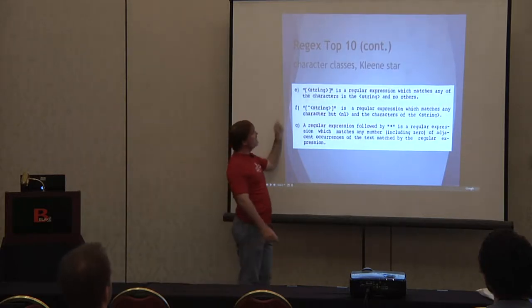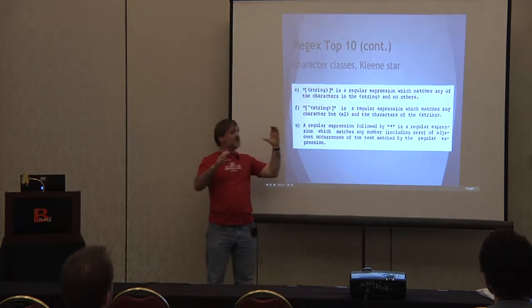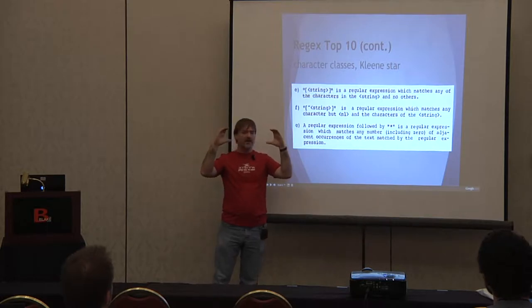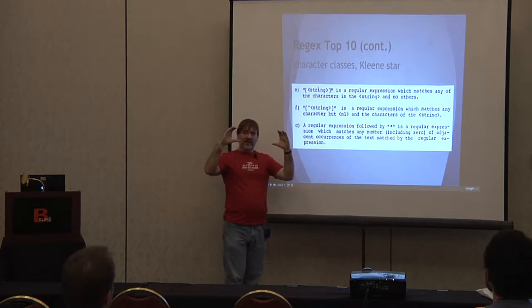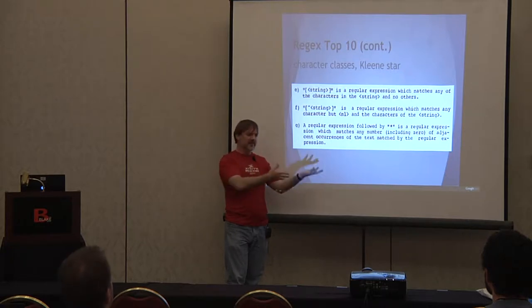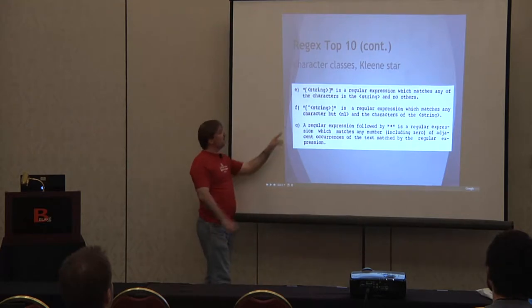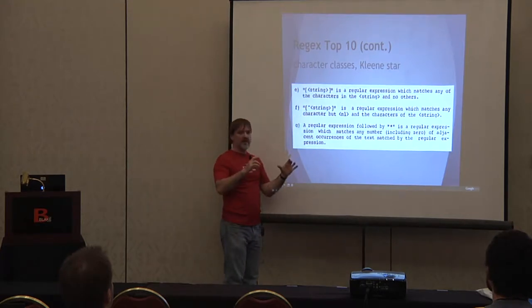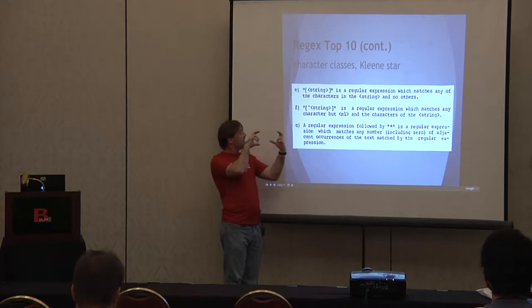Now we have character classes. A character class is any set of ordinary characters between two square brackets. That's a character class, and it will match any single character from that set in the target string. Then we have a negated character class — if you put a caret as the first character inside a character class, that switches the logic: it says match any character that doesn't occur within these square brackets.